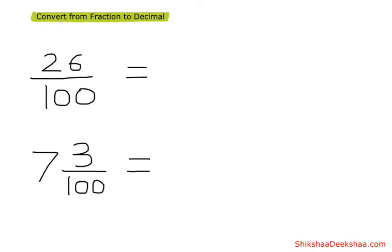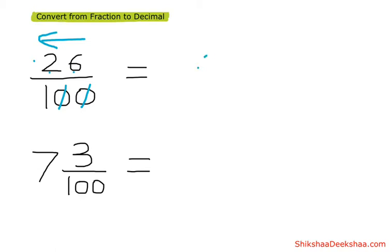Now let's learn how to convert from fraction to decimal. In our previous video we understood about the zeros at the bottom. We know that if we have two zeros at the bottom then we have to start counting two digits from right to left and then put the point. So we have two zeros at the bottom — count one, two — and then put the point. Our answer is point two six.